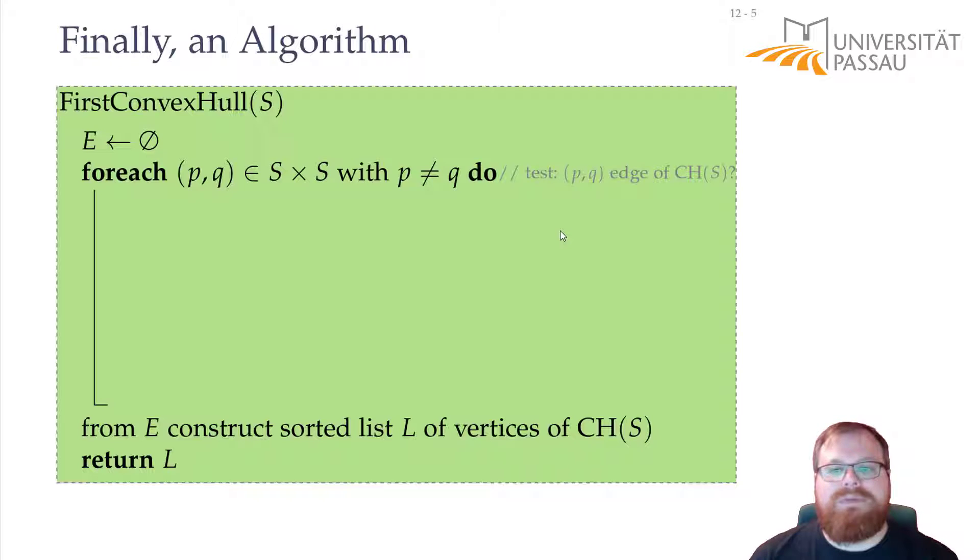That means we want to test, is this edge an edge of the convex hull? And for that, we can use our observation. We just use a flag that says yes, this is an edge of the convex hull. And then we compare with all the other points. And if this flag at the end is still true, then we add the edge to the convex hull.